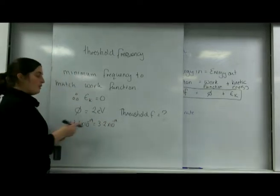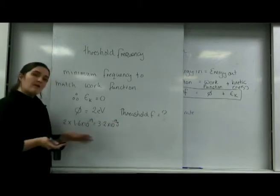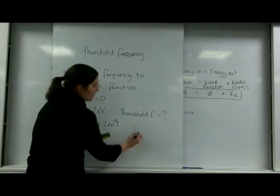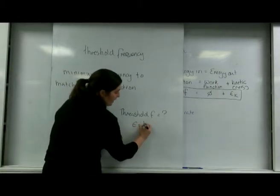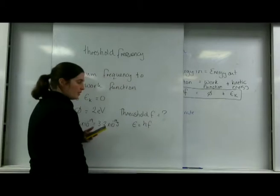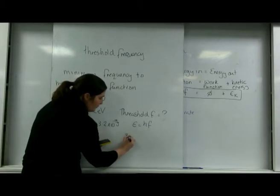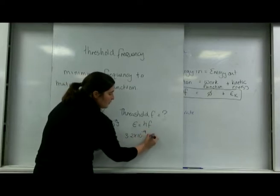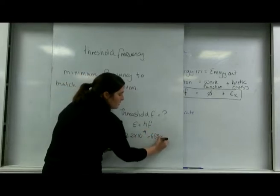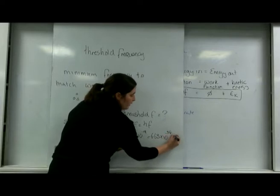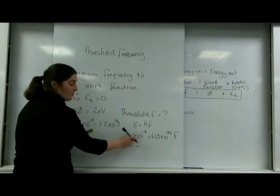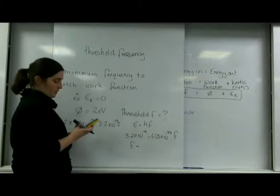So I know, Joules, this is the minimum amount of energy I'm going to need. So I'm going to put that into my photon. Energy equals HF. So I've got 3.2 times 10 to the minus 19 equals 6.63 times 10 to the minus 34 F. F equals this one divided by this one.